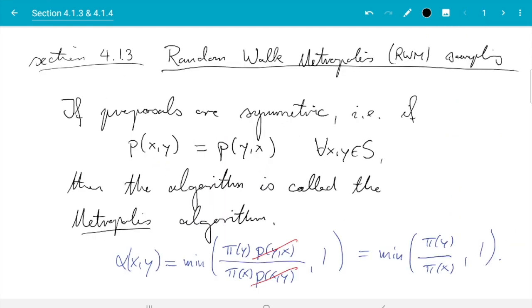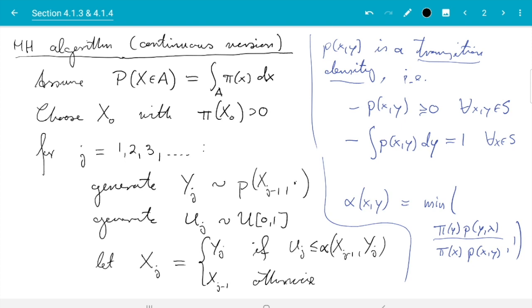And we can work with this simplified acceptance probability which just has pi of y over pi of x in. And we don't in this case need to assume anything about what the increments epsilon look like. As long as it's symmetric their distribution plays no role. And in particular in this case nowhere in the algorithm we need to work out p. Because the only occurrence was in alpha which has cancelled.